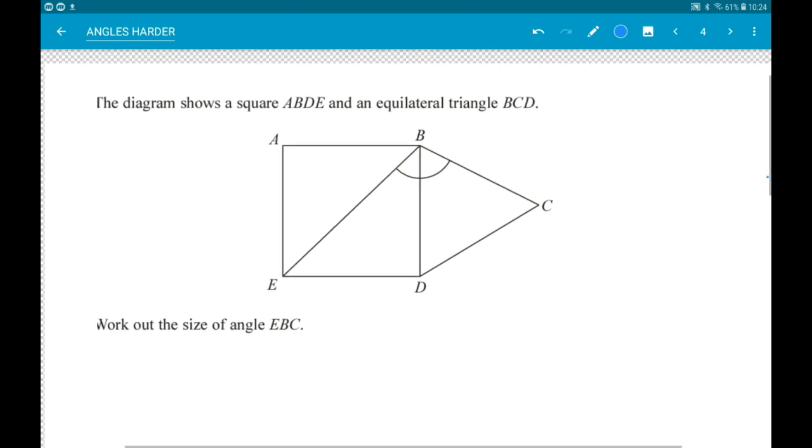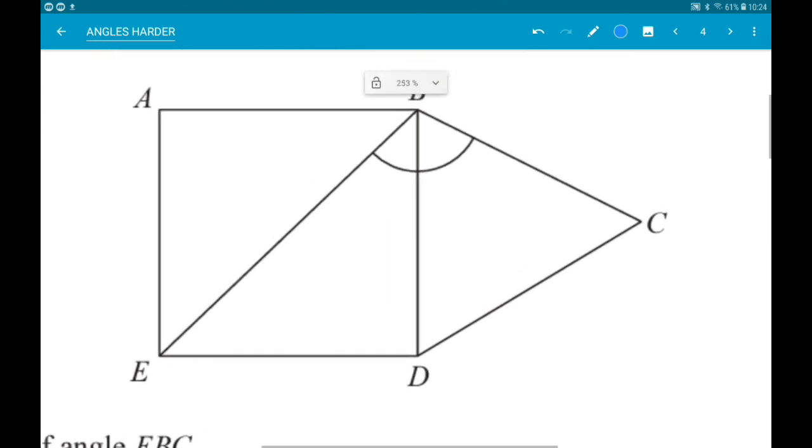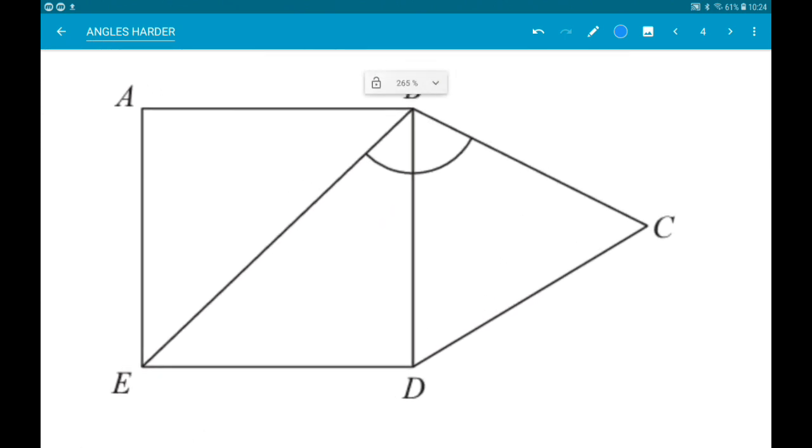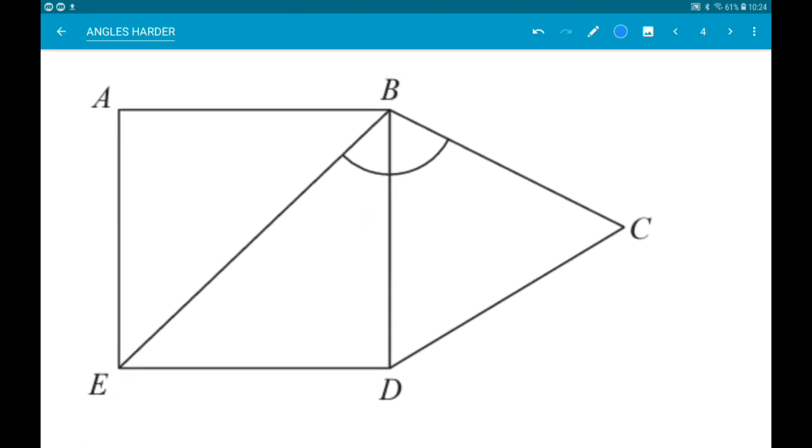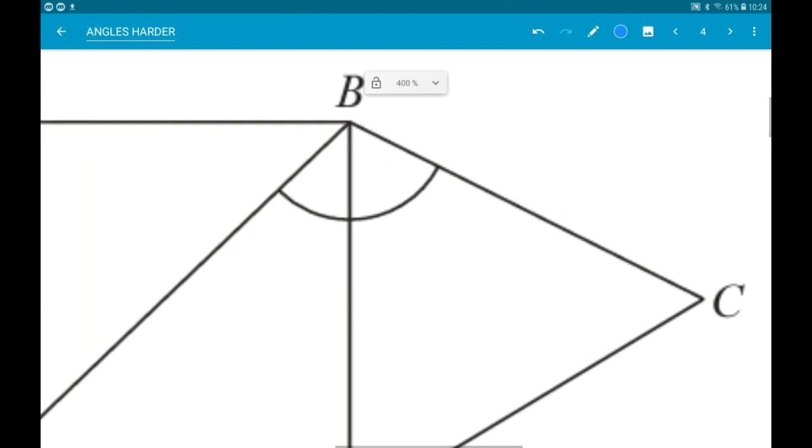So EBC is this whole angle here that they've drawn in for us. Now, we know in a square the angles at vertices are right angles. This line EB is going to be cutting that angle exactly in half. So this blue bit is going to be 45 degrees.